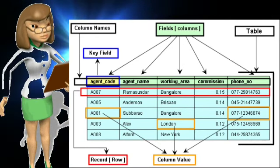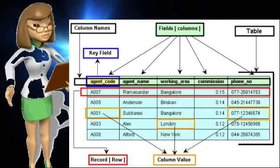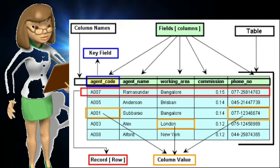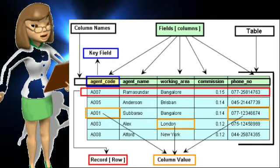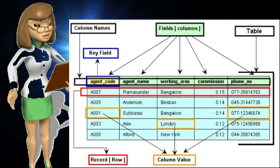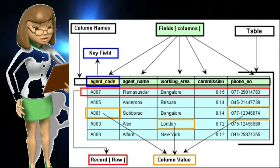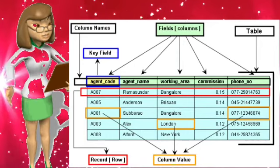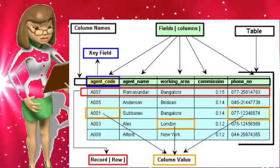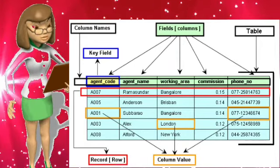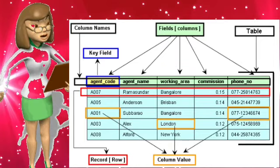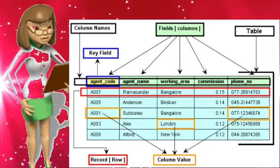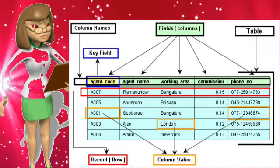A field name is a column label for a field in a database. All field names appear in a single row above the data. A field can have only one field name, and each field name must be unique.